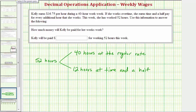Which means her weekly pay, which we'll call W, would have to be equal to 40 times her weekly rate of $16.75, so 16.75, plus 12 hours times time and a half. To represent time and a half, that would be 1.5 times her regular rate, so 1.5 times 16.75.